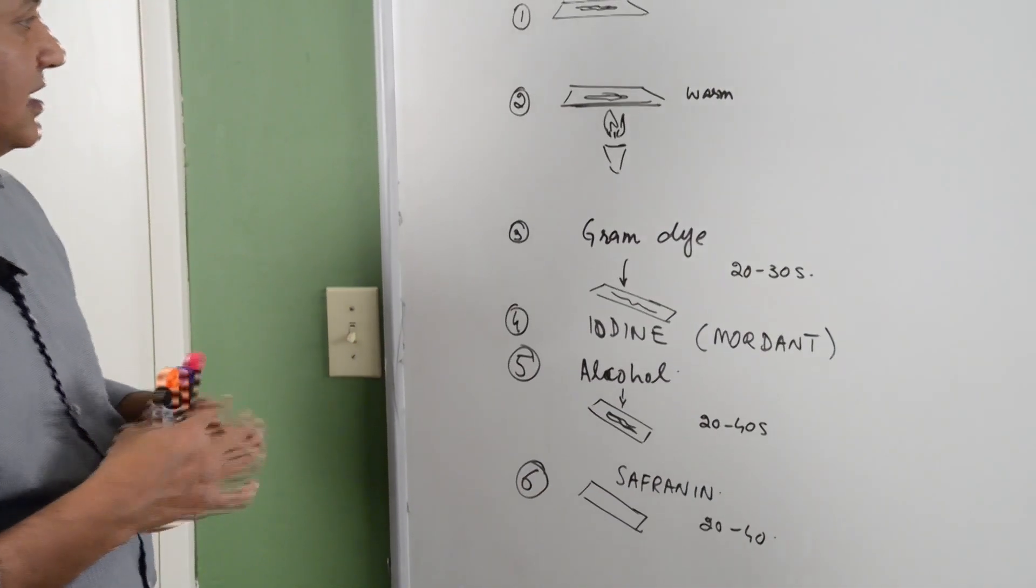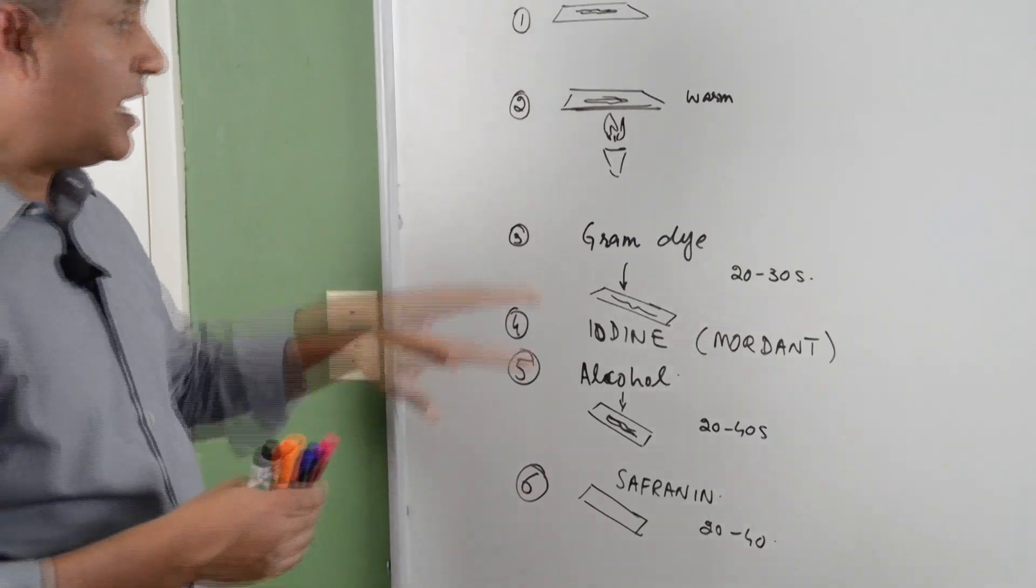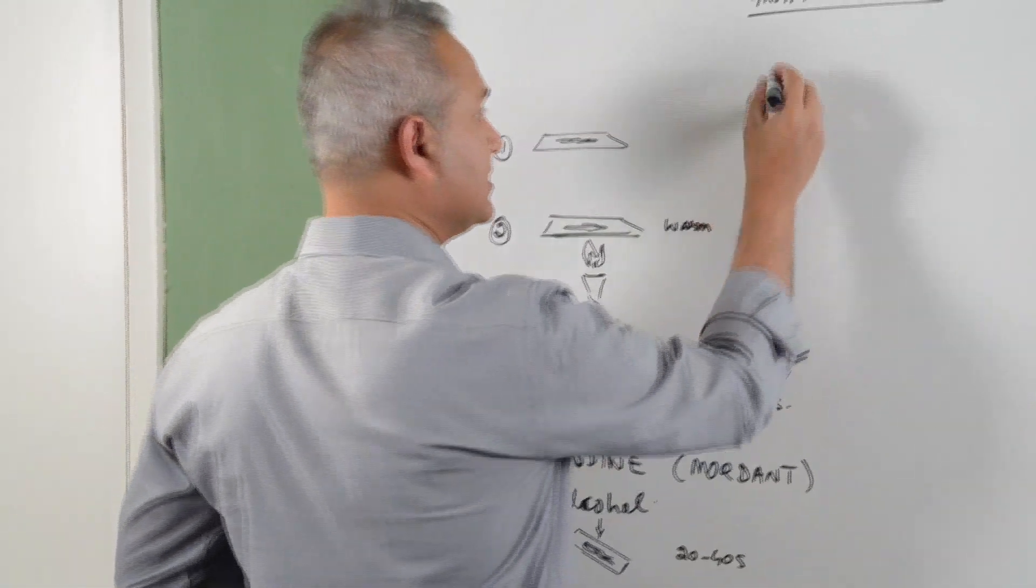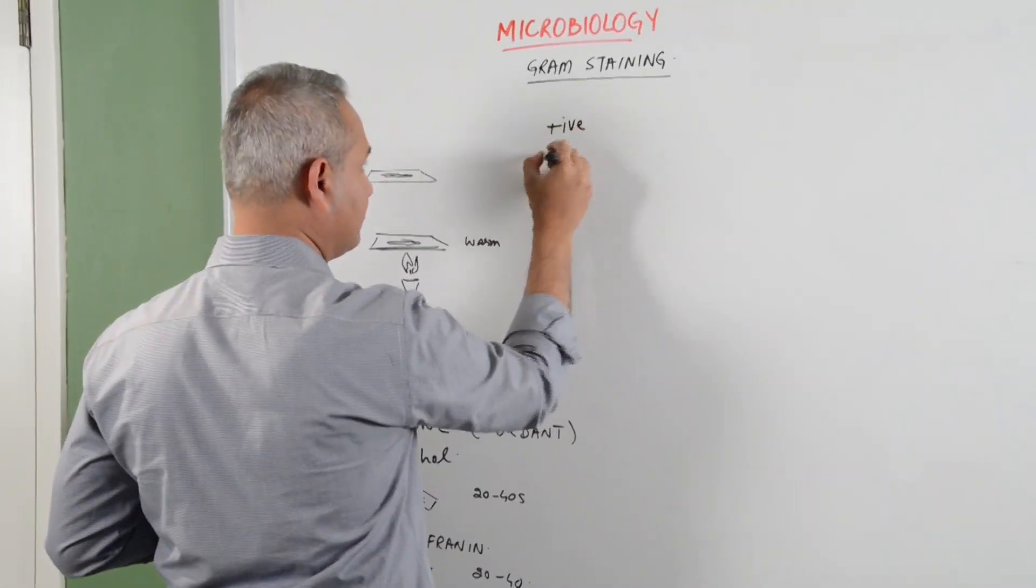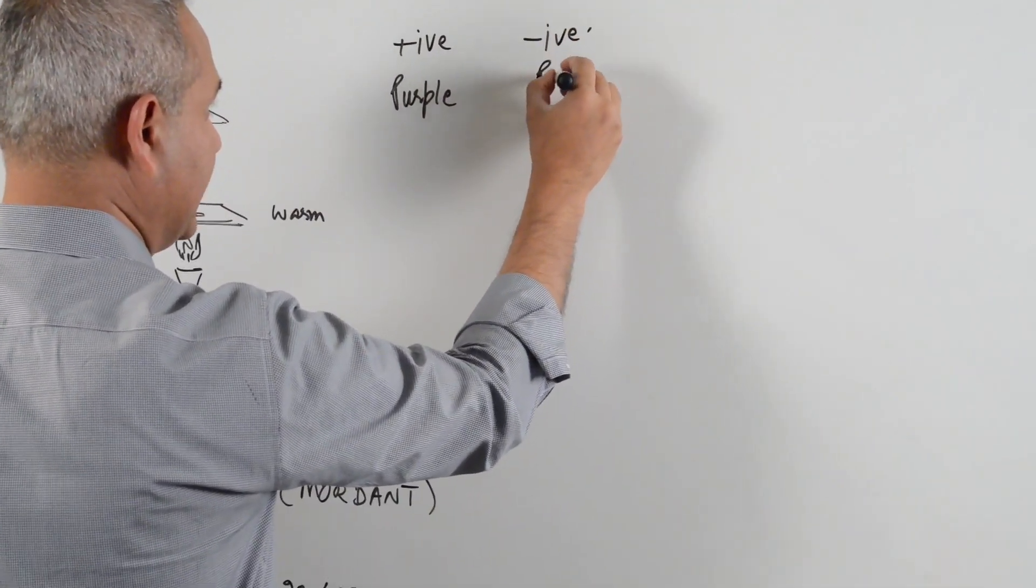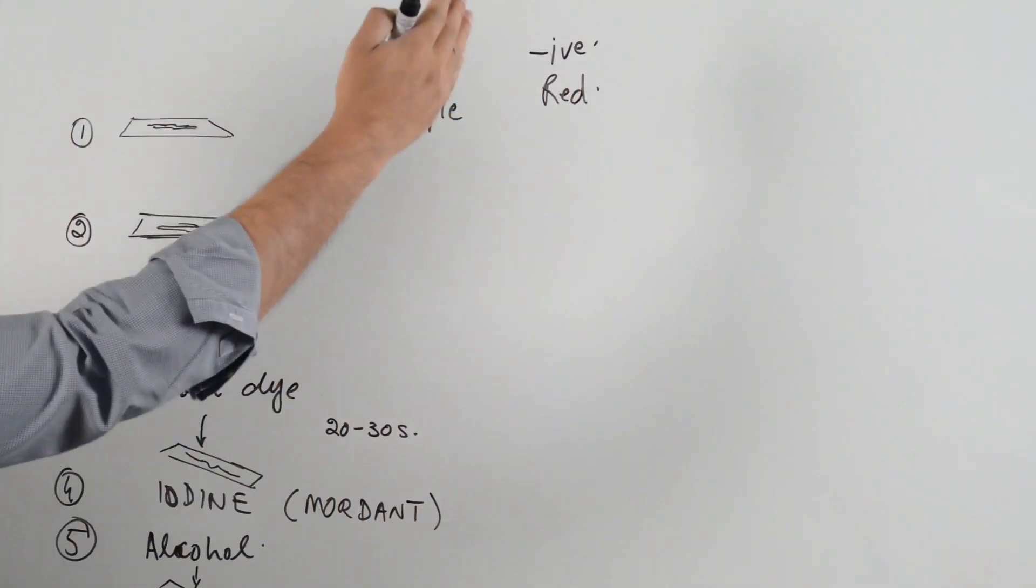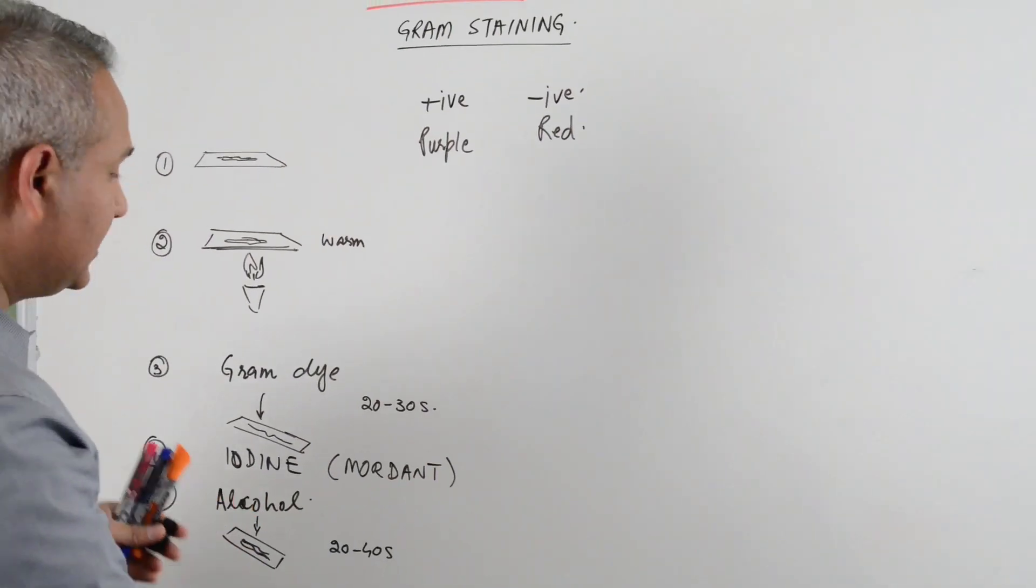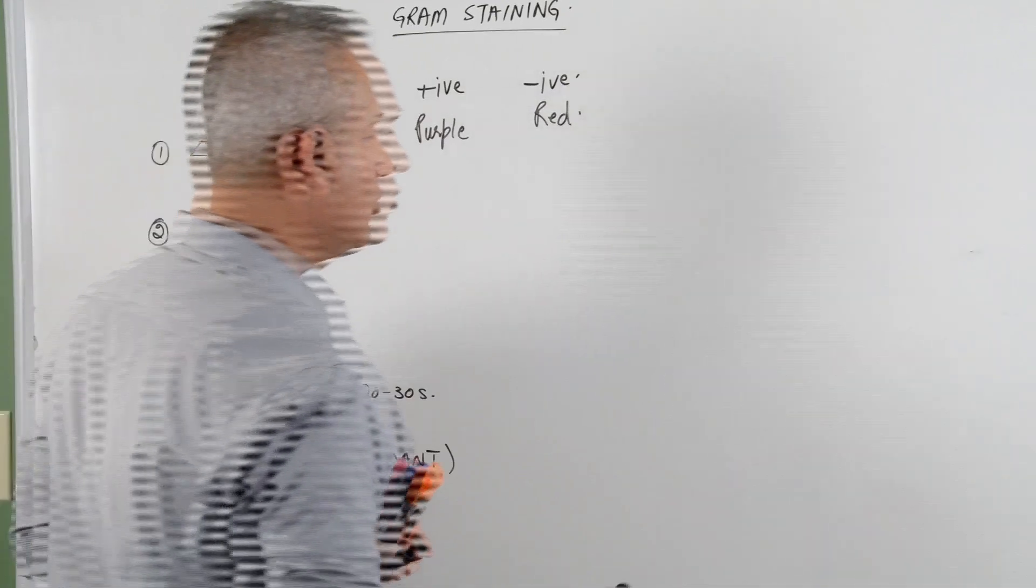So the question is what happens. Out of this, after this if it is a Gram positive bacteria it would be turning up purple. If it is a Gram negative bacteria it will be red. So now let's see, let's make a Gram positive and a Gram negative bacteria and see what happens during this course of action.